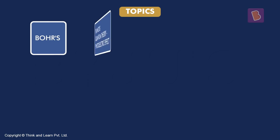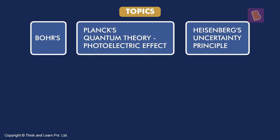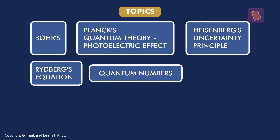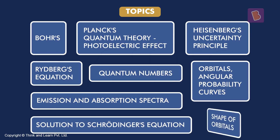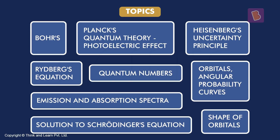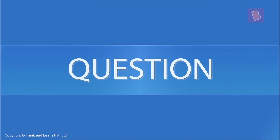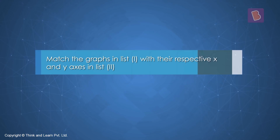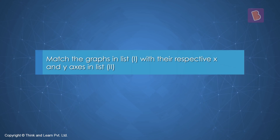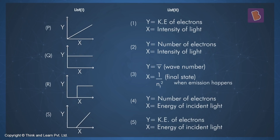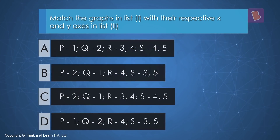There's the classical theory of Bohr's, then you have Planck's equation, Heisenberg's uncertainty principle, and many other things — all the way up to Schrödinger's equation and its solution, which gives us the shapes of orbitals and the modern quantum mechanical theory. We're going to solve some really interesting questions that will help you prepare better for this chapter from the point of view of the JEE exam.